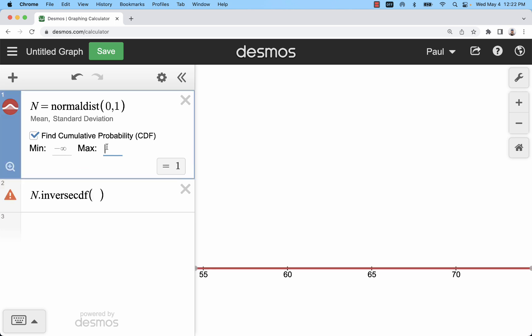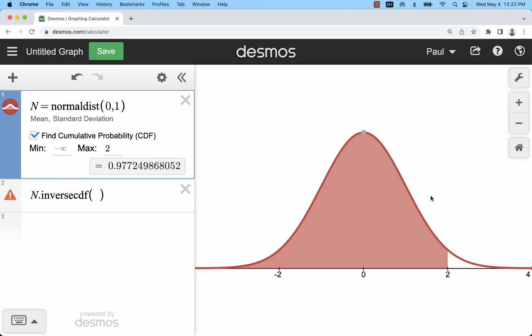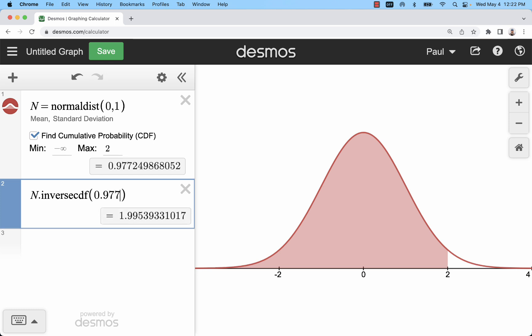Let me go to just the area to the left of a z score of two. So we can see what that looks like. That's 97.7 percent. This inverse cdf is going to take an inputted area and turn it into a z score or if I have a mean and standard deviation other than zero and one, a data value x.